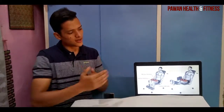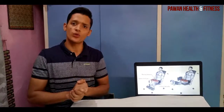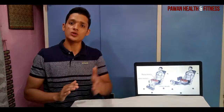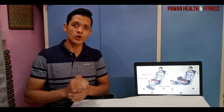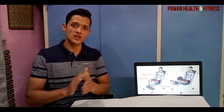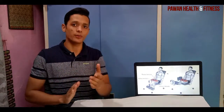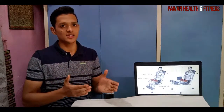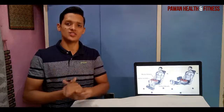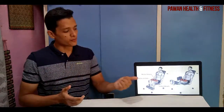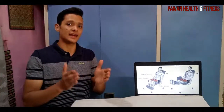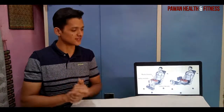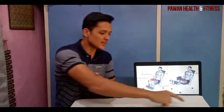For leg extensions, do approximately 3 to 4 sets — 8 to 10 reps for muscle building, and 15 to 20 reps for lean quads. This is a great exercise with no risk of back injury since you're only focusing on the leg muscle — the vastus medialis.